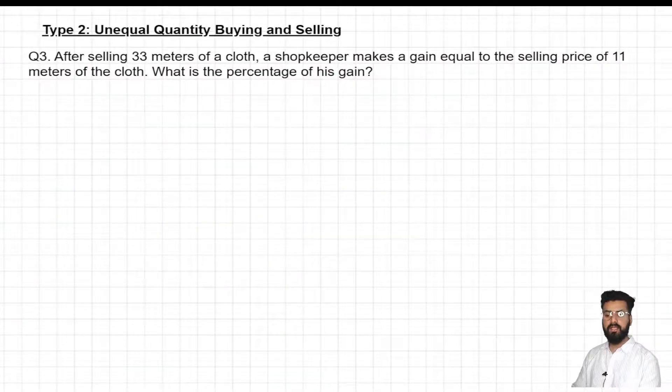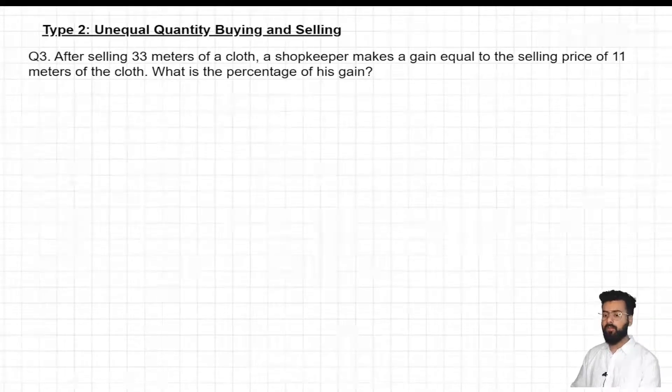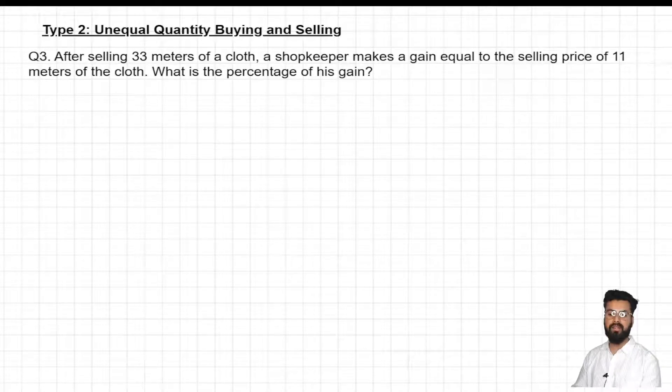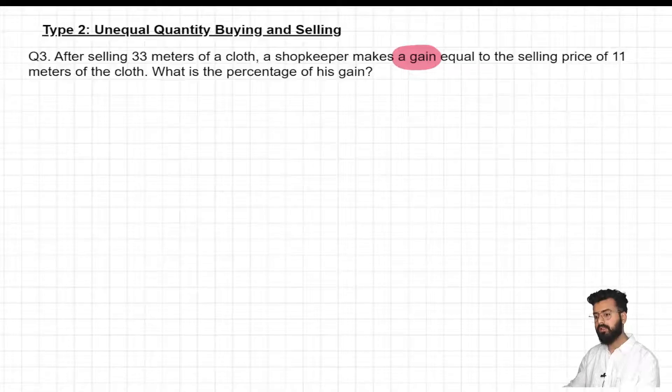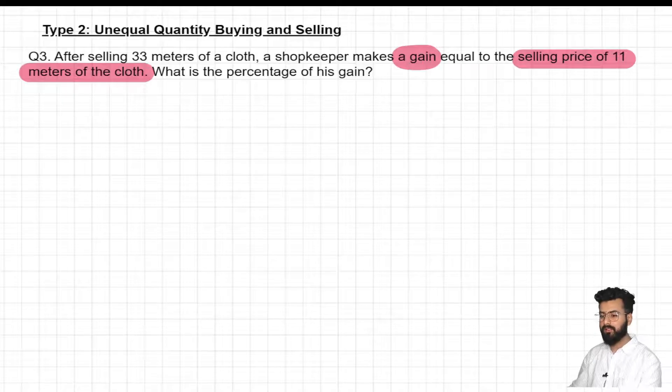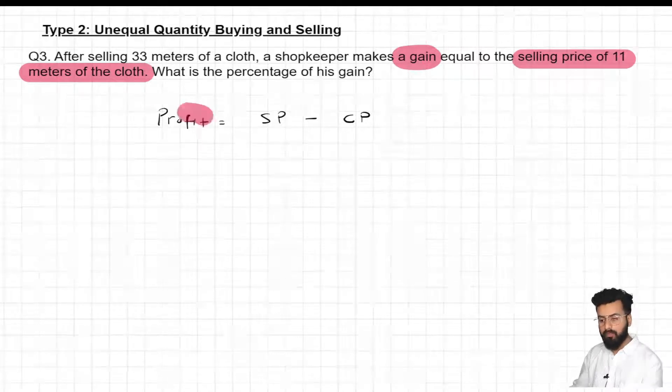Let's look at another question. Again, this is based on type 2 only. After selling 33 meters of a cloth, a shopkeeper makes a gain equal to the selling price of 11 meters of cloth. What is the percentage of his gain? I know, many of you must be confused ki sir, yeh toh mujhe type 2 ka question nahi dikh raha hai. But if you read it carefully, you'd realize ki, yaha peh kya bataya gaya hai? Ki shopkeeper ko gain hua. Kitna gain hua? Equal to the selling price of 11 meters of cloth. Now, how would you write it down? Please see, if I try to write it down mathematically, I would say ki, ish shopkeeper ko profit hua? And how do we calculate profit? You would say sir, in order to calculate profit, you know what we do? We find the difference. Difference between selling price and cost price. First, try to write down the value of profit.